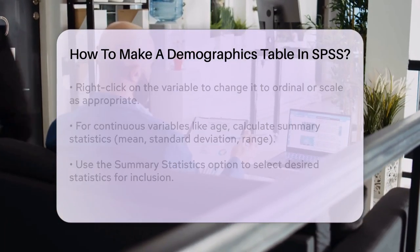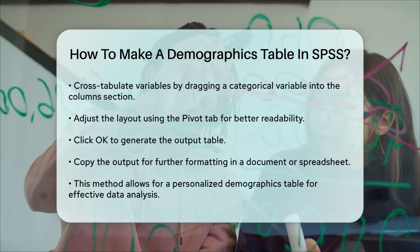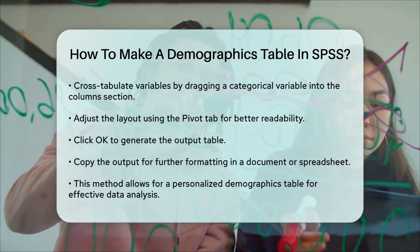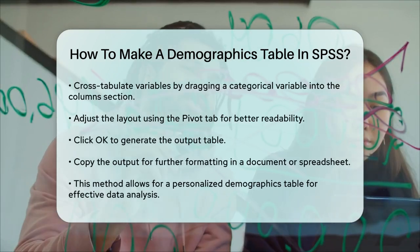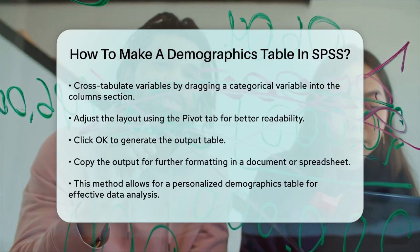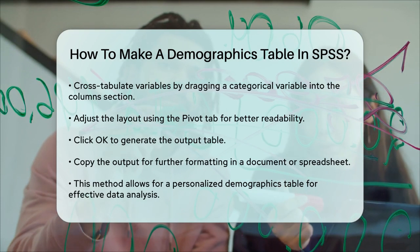To make your table more readable, you can adjust the layout. For example, if you want the variables as rows and the statistics as columns, you can use the pivot tab to transpose the table.